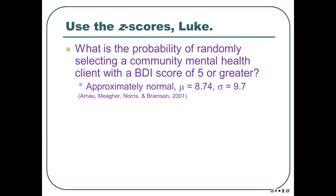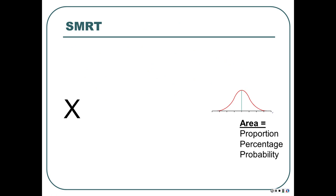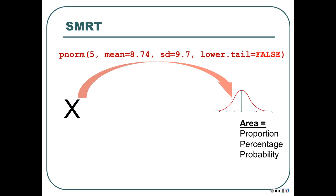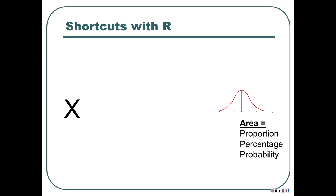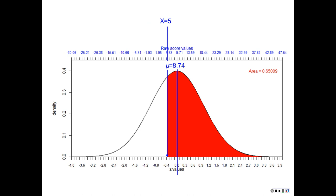For the BDI example in R: pnorm(5, mean=8.74, sd=9.7, lower.tail=FALSE). We put lower.tail equals FALSE because we want the percentage of people scoring above 5, not below. The result gives us about 65%, 0.65 — the area above a score of 5 in that distribution.